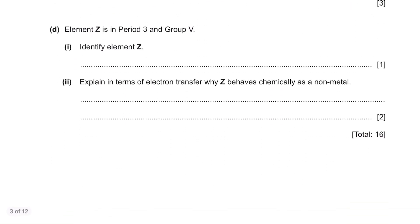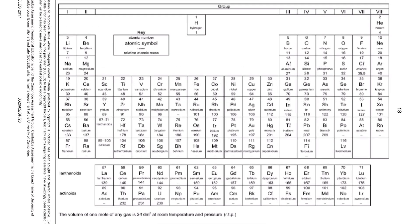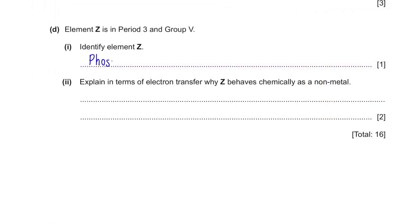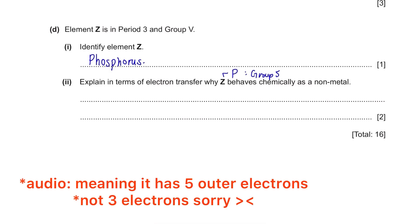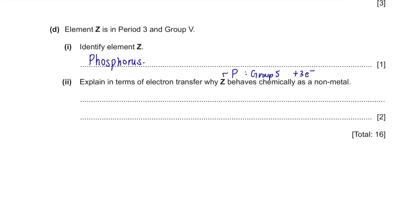Part d. Element Z is in period 3 in group 5. Looking at the periodic table, period 3 and group 5 overlap at phosphorus. To explain why Z behaves chemically as a non-metal in terms of electron transfer: phosphorus is in group 5, so to become stable it gains 3 electrons when forming ions. Gaining electrons is the characteristic of a non-metal.